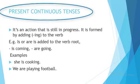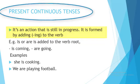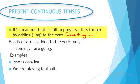We also have the present continuous tense. Most of the time we form the present continuous tense by adding -ing to the main verb. For instance, 'come' plus -ing becomes 'coming.'